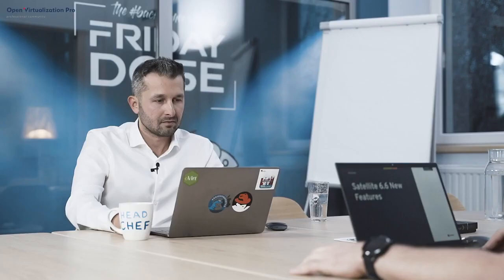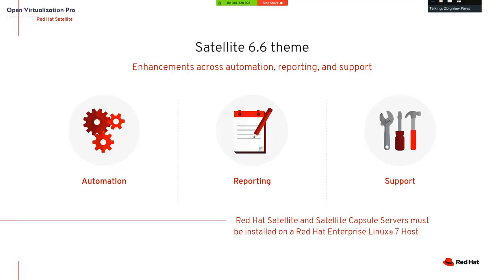What are the new features in Satellite 6.6? The biggest improvement is in automation, reporting, and key support. Before version 6.4, looking at the reporting list showed a very empty webpage with only a button to create a new report, which was not easy because reports were written in Ruby. From version 6.5, there is a set of templates you can use, modify, and build your own reporting from.